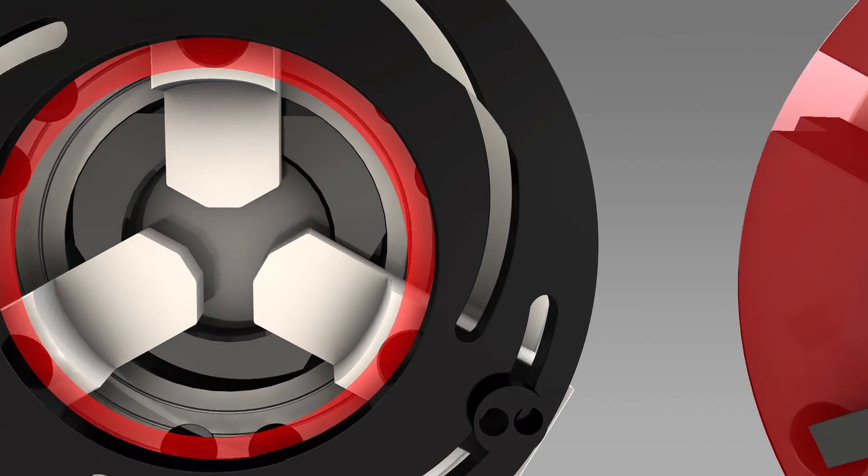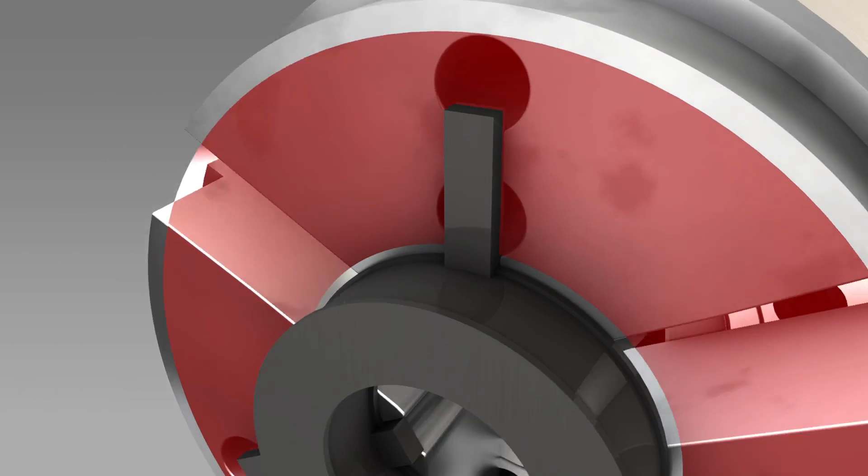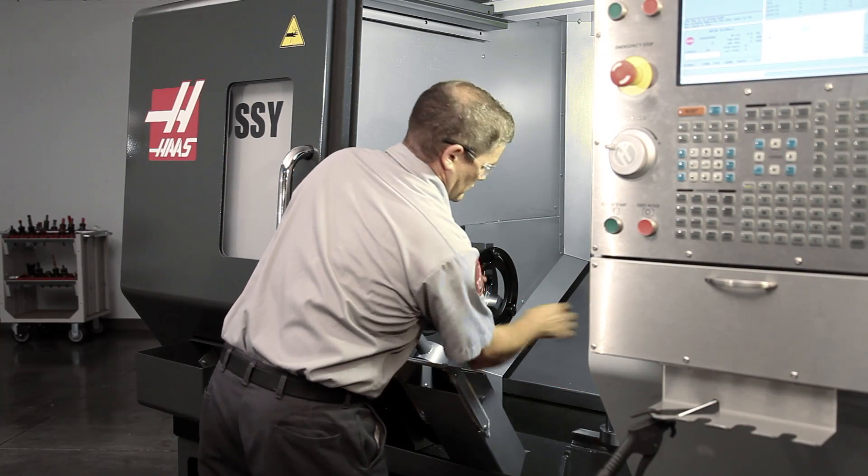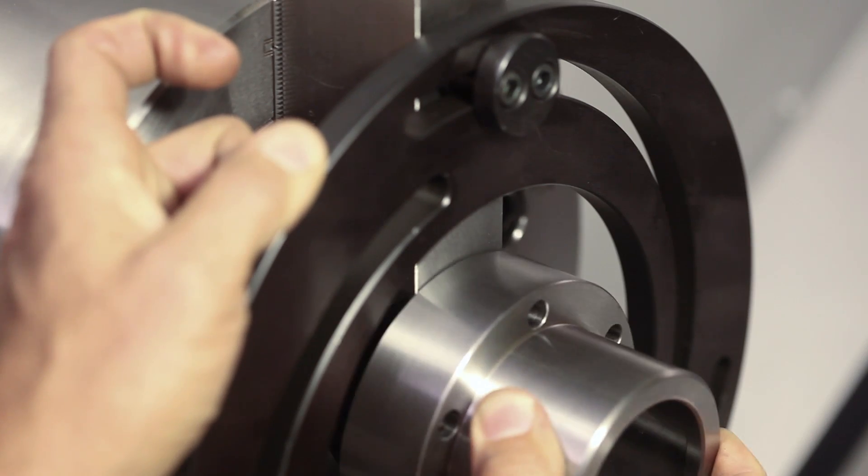Conversely, ID gripping jaws should be positioned just slightly larger than the workpiece inner diameter. We will use our part to set the initial position of the jaws as they clamp the boring ring.